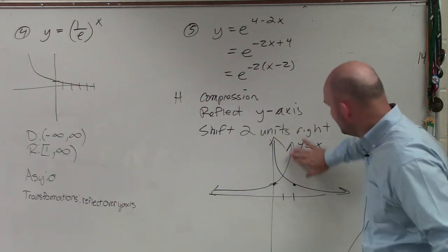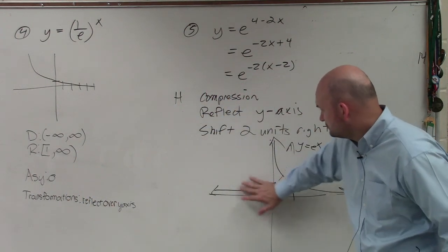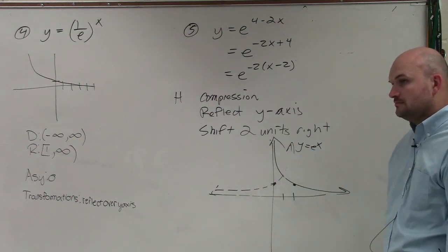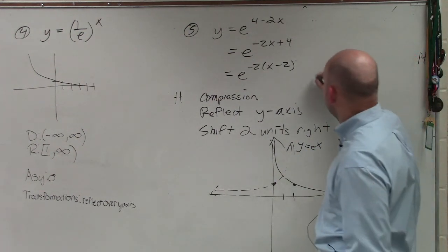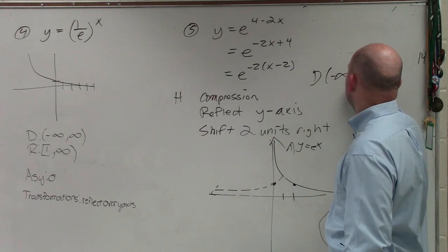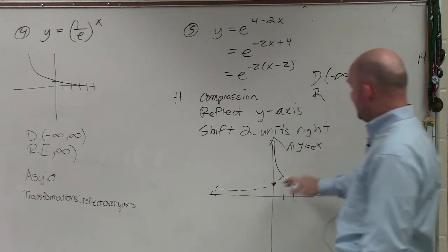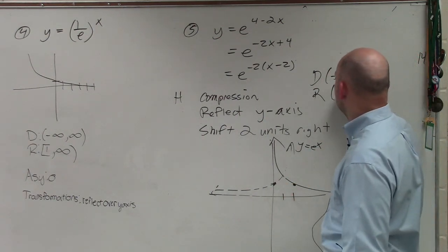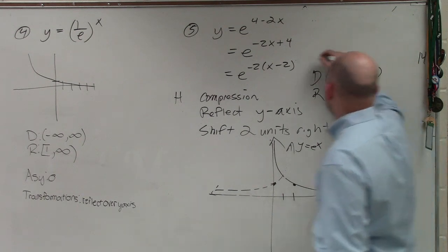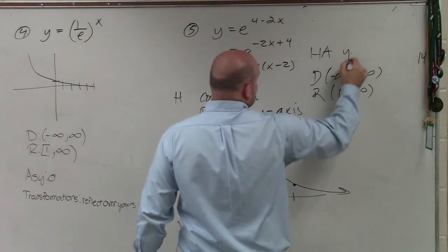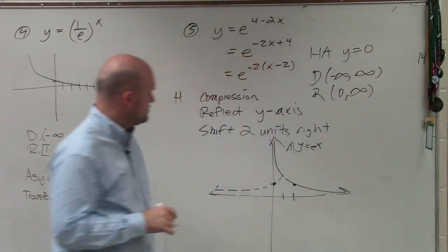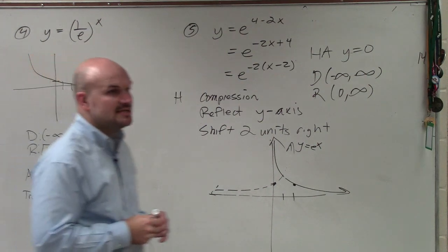So it's going to look something like that. Got it? My domain is still going to be negative infinity to infinity. My range did not change. So that's going to be from 0 to infinity. I have a horizontal asymptote at y equals 0. And that's it.